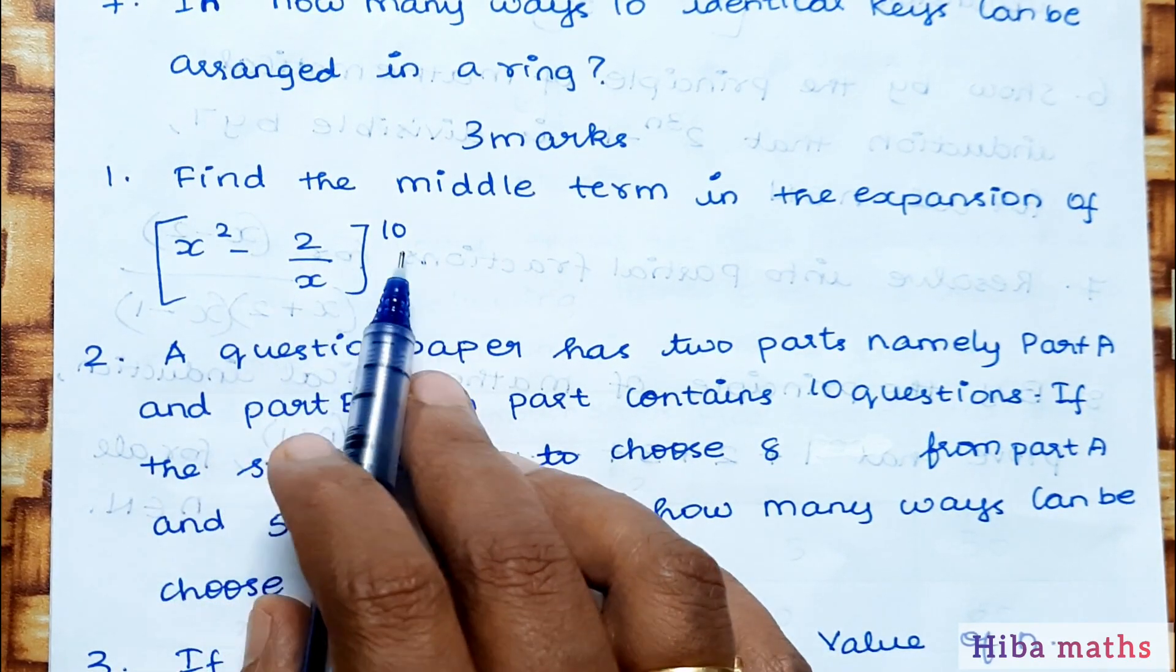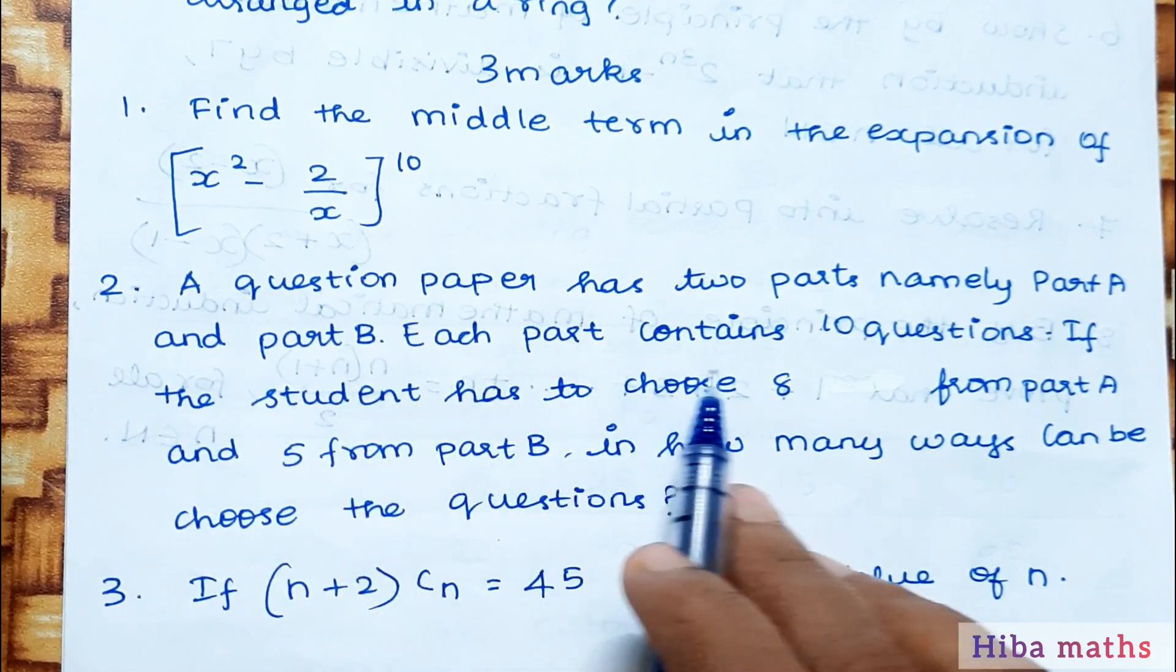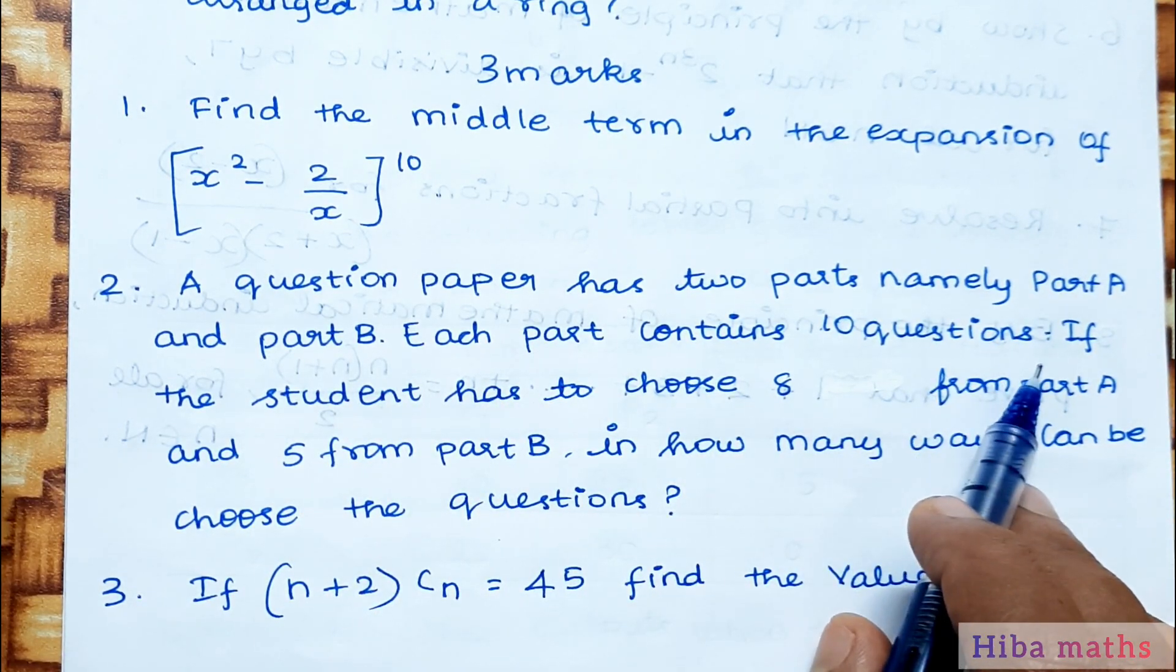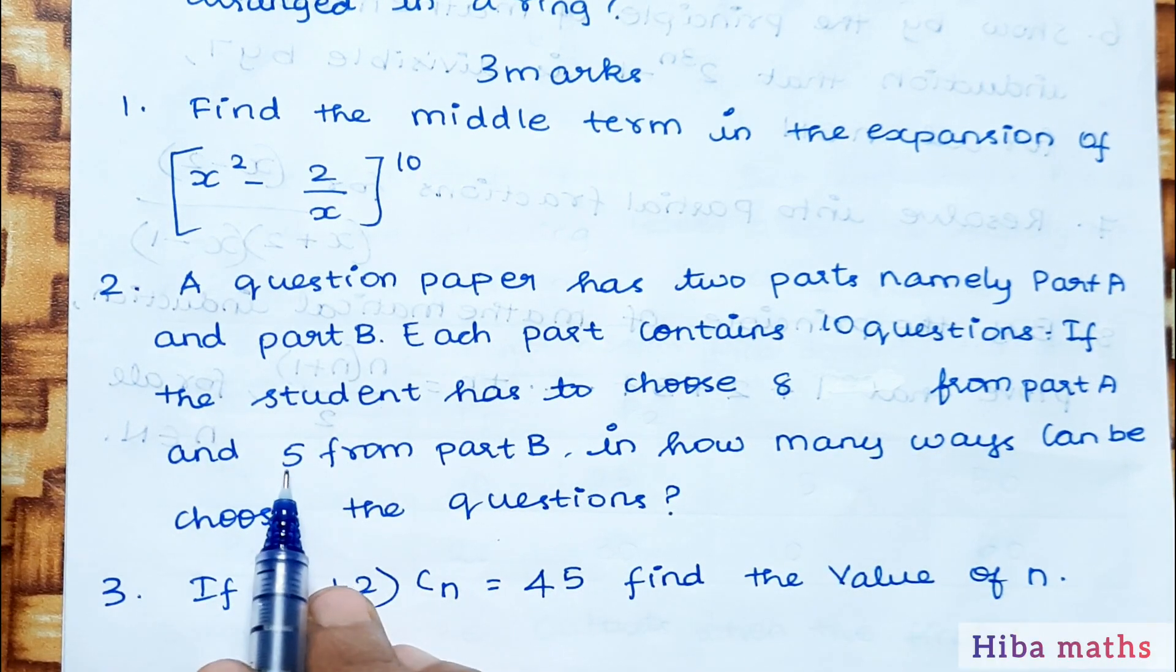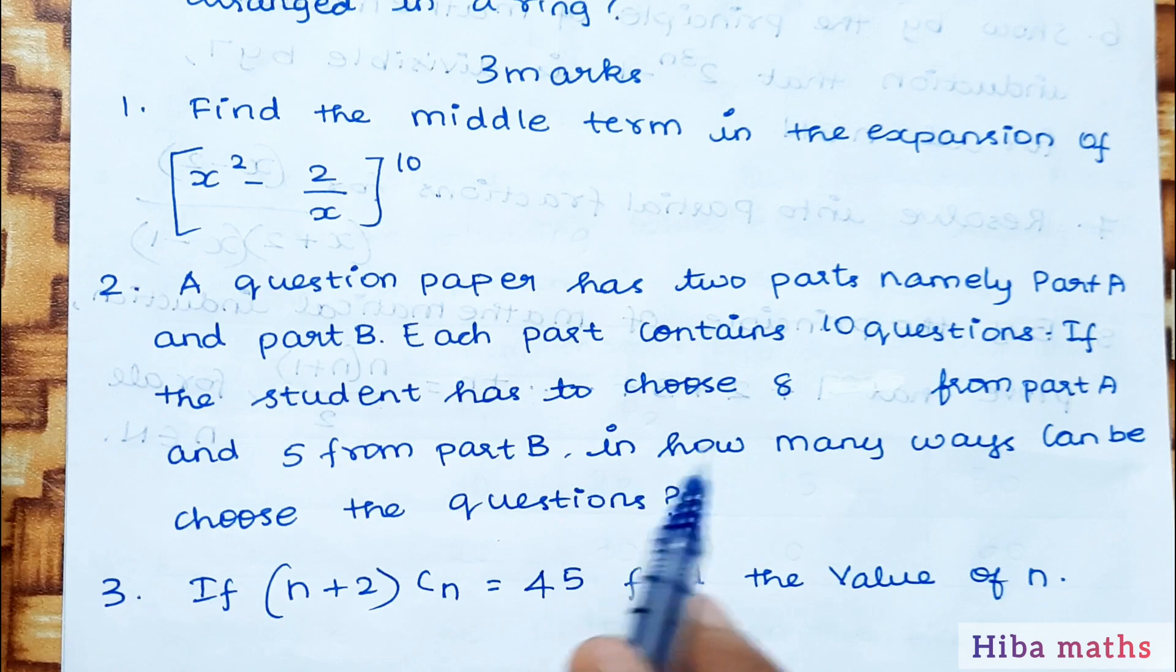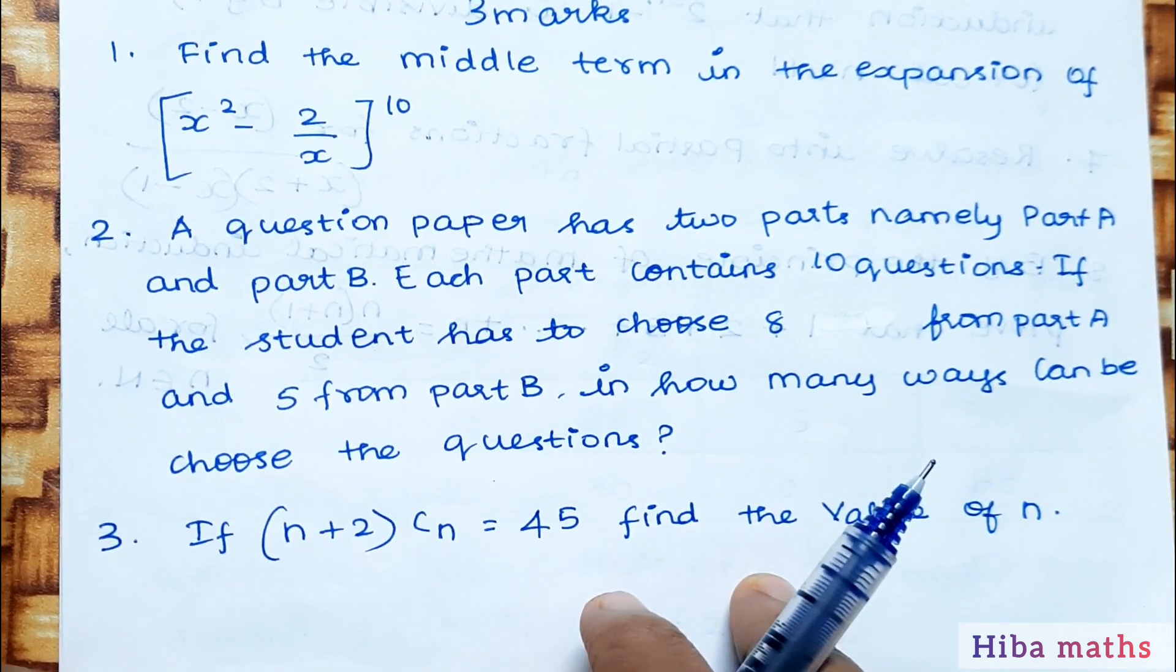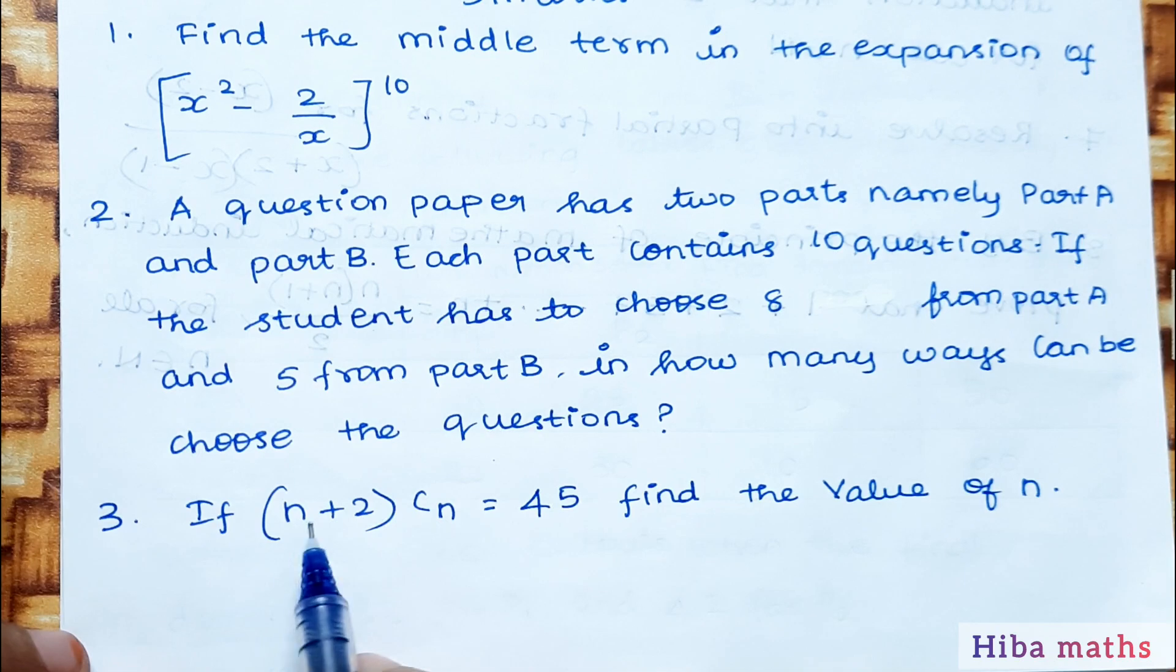A question paper has two parts, part A and part B, each containing 10 questions. If the student has to choose 8 from part A and 5 from part B, in how many ways can they choose the questions? This is an application type sum.